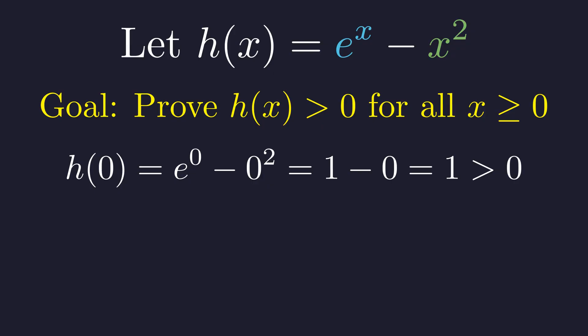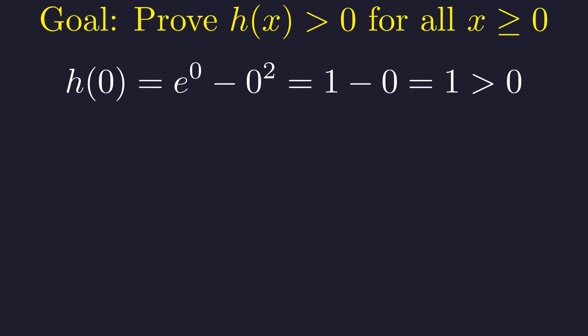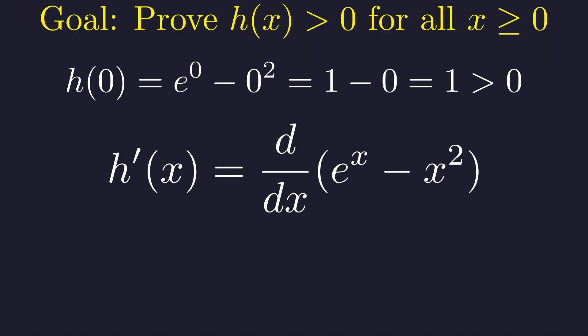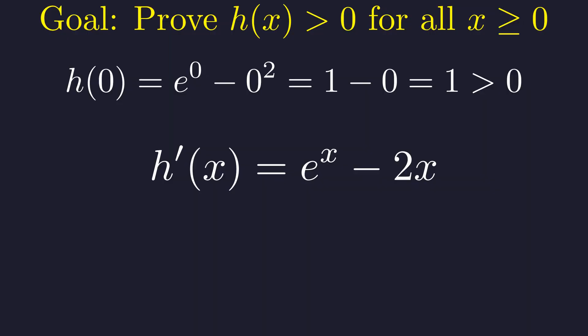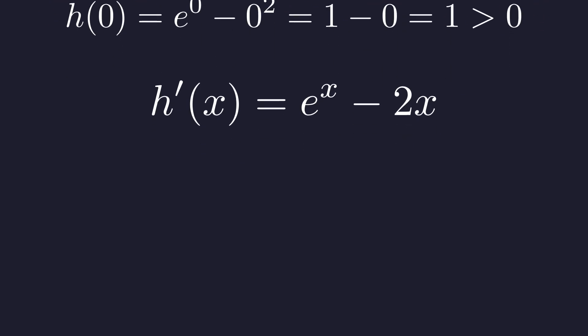Let's compute the derivative. That's the rate of change; it tells us if the function is increasing. Taking the derivative with respect to x, the derivative of e to the x is e to the x, and the derivative of x squared is 2x. Let's evaluate this at x equals 0. At x equals 0, this derivative is 1, which is positive. But to prove the derivative is always positive everywhere on the non-negative reals, we need to find its minimum value.